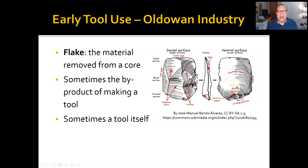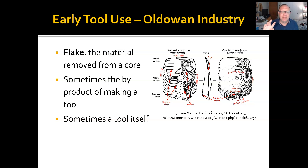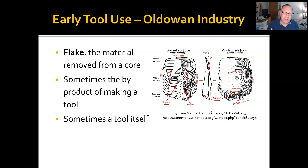As you'll see in some of the later videos about the Acheulean industry, they used two different kinds of objects to strike stones with. They used stones, which produced rough flakes, and then they used softer material like bone, antler, or maybe even wood to produce longer, thinner flakes so that you get a thinner profile on the tool. It's really fascinating.